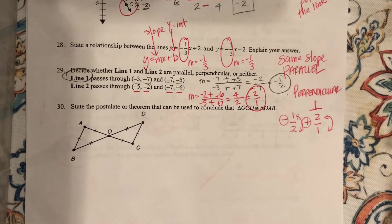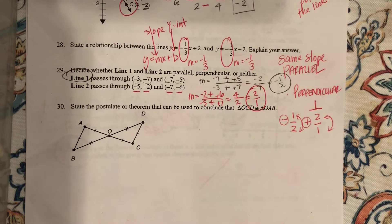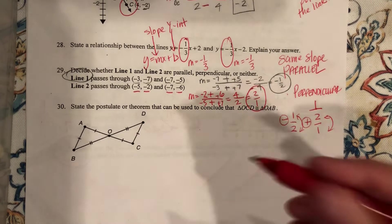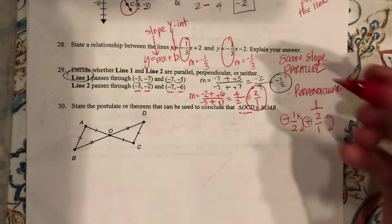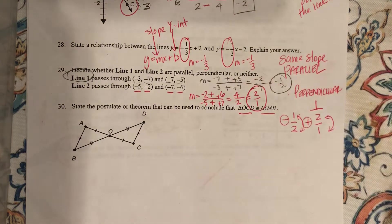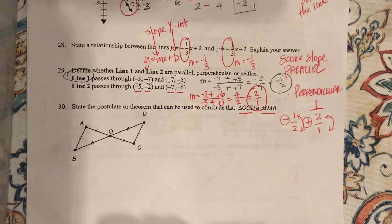What's a reciprocal? It's when you flip. All right. So let's look at 30. State the postulate or theorem that can be used to conclude that triangle OCD is congruent to triangle OAB. All right. OCD and OAB.